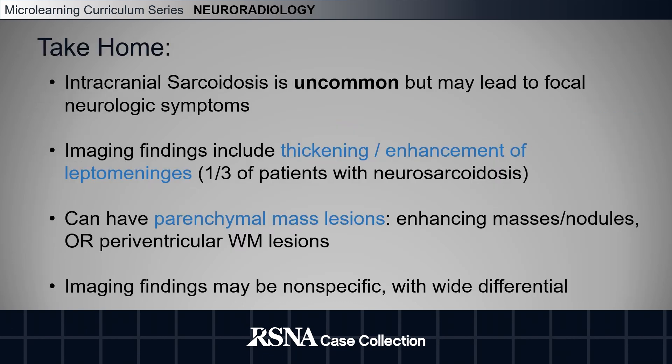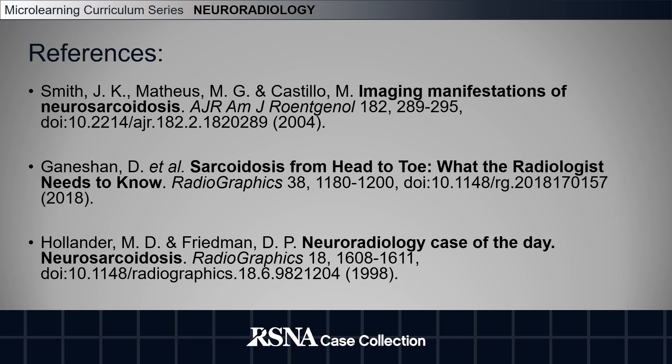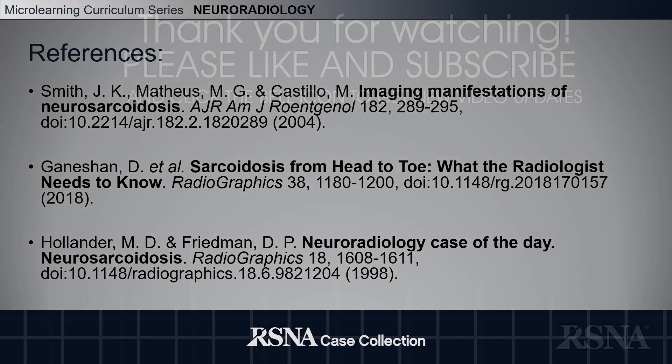In conclusion, intracranial sarcoidosis is uncommon but may lead to focal neurologic symptoms. Imaging findings include thickening or enhancement of the leptomeninges, parenchymal mass lesions — either enhancing masses and nodules or periventricular white matter lesions. However, imaging findings may be non-specific, and it is important to consider a wide differential diagnosis based on the pattern of involvement. Thank you for listening to this microlearning curriculum series presentation.